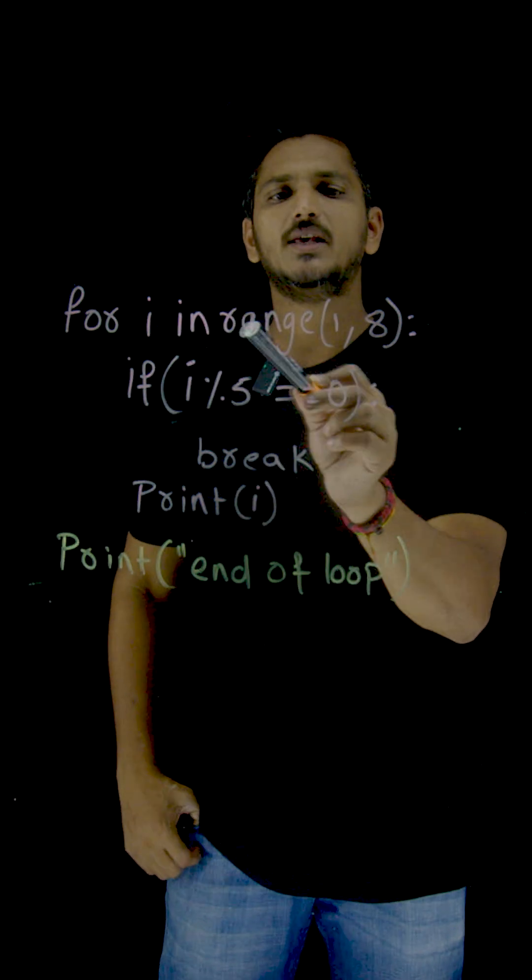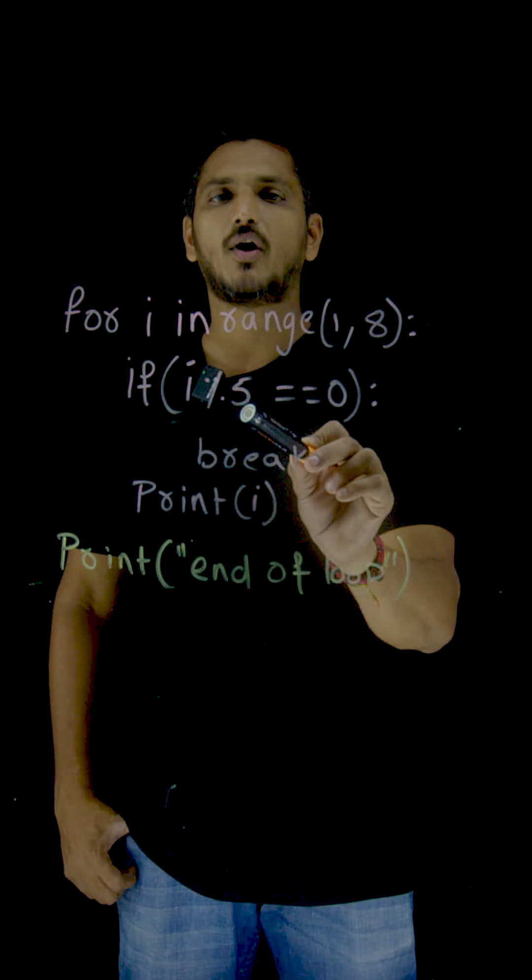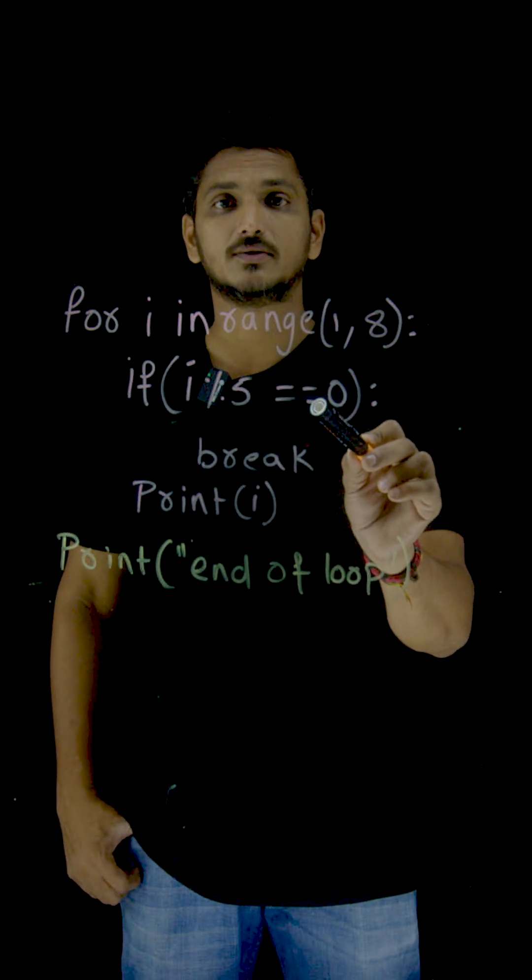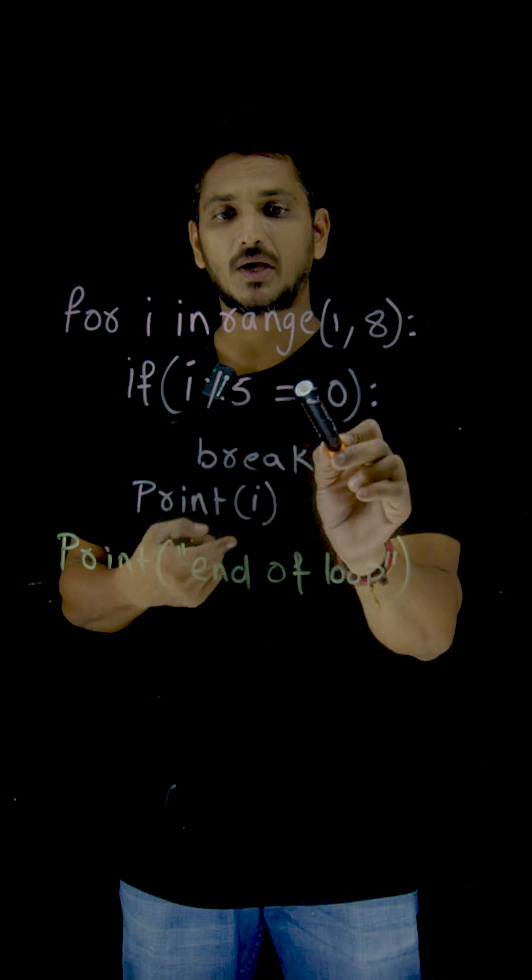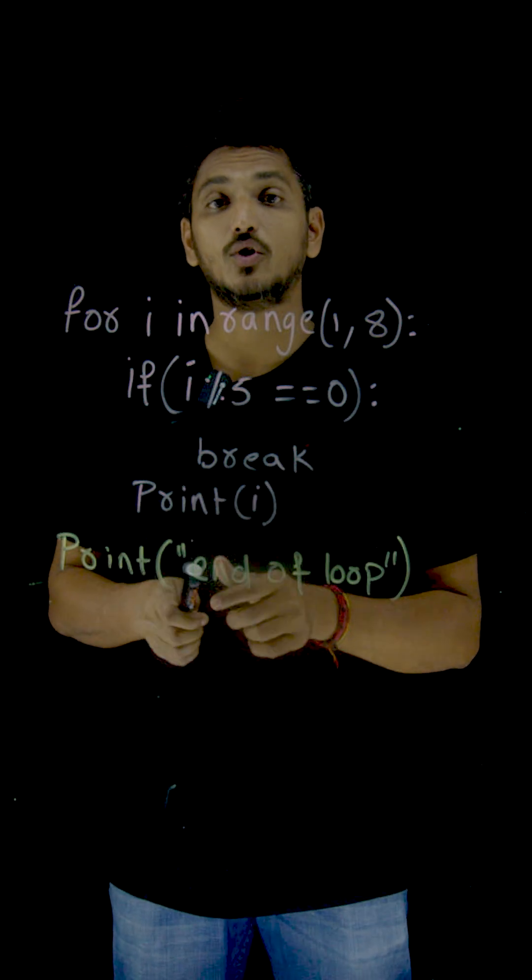We will analyze the example. For i equal to 1, go inside, execute the body of the loop. 1 modulus 5 equal to 0. No. False. Don't go inside the if statement because condition is false. Execute print i. 1 is going to be displayed.